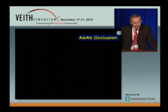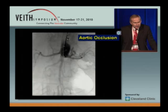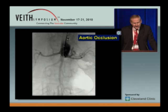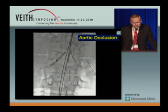Lastly, I would like to show you a quite new indication for chimney grafts, and that is aortic occlusion. Until now we have refrained from using endovascular techniques because if you stent the aorta, you're likely to squeeze the thrombi and trash the visceral arteries.